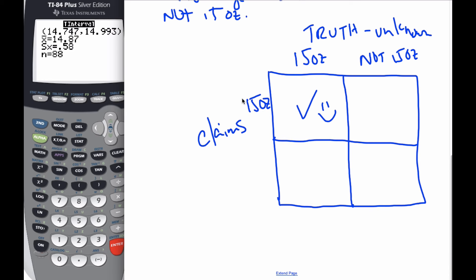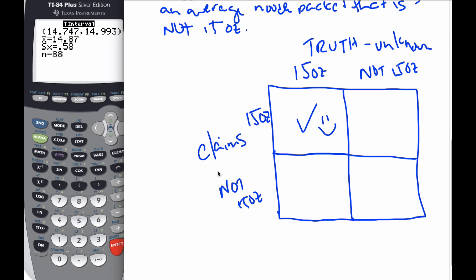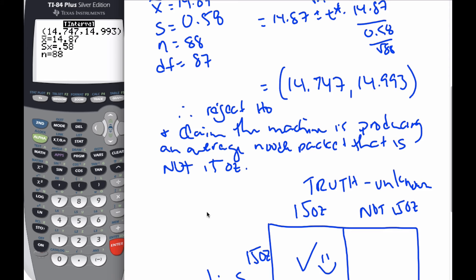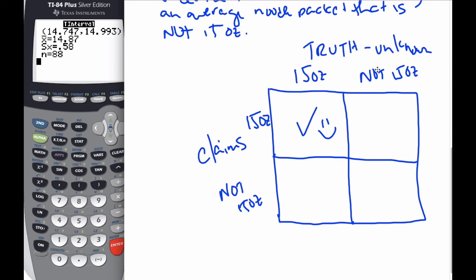But if we claim by statistics that it's not making 15 ounce packages and it is, or it is making 15 and it's not, that is a problem. Similarly, I could claim it is not making 15 ounce packages, which is what we just did. And the truth could be that it's not. That is the right decision.